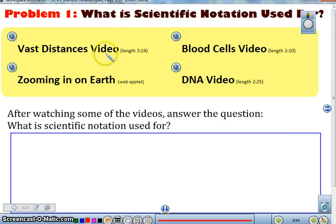So that was the first one where you got really large numbers. The DNA in the blood cell video are much shorter videos, and they kind of work with the really small numbers.